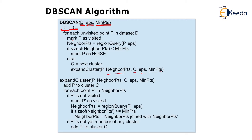In the expand cluster subroutine, add P to cluster C. For each point P' in neighbor points: if P' is not visited, mark P' as visited and compute region query (P', eps). If the size of neighbor points is greater than or equal to minimum points, merge neighbor points with neighbor points'. If P' is not yet a member of any cluster, add P' to cluster C.